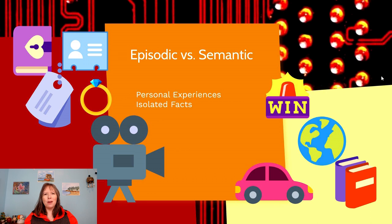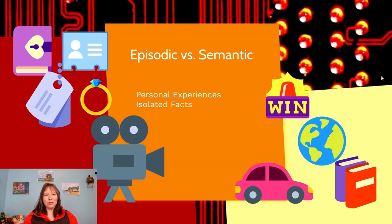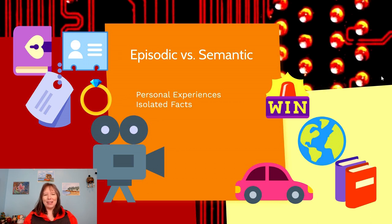Semantic memory, by contrast, is less personal — it's more factual and isolated information, like trivia. You don't really remember the specific time you went to a park and saw ducks, but you know that ducks spend time at parks. You may not remember learning to drive, but you know how to drive. Semantic memory includes things like capitals of countries or book knowledge — not the memory of you learning that knowledge, just the knowledge itself.